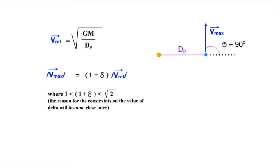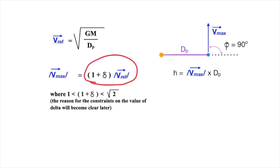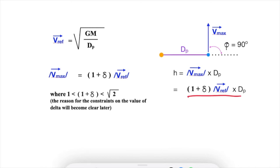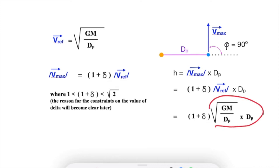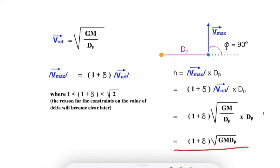We immediately know the specific angular momentum of the planet. Because phi always equals 90 degrees at perihelion, h equals the magnitude of Vmax times dp. We can substitute the expression for the magnitude of Vmax and then substitute the expression for Vref, and after simplification we get our expression for h, which we will continue to use going forward.